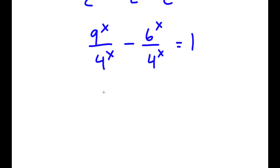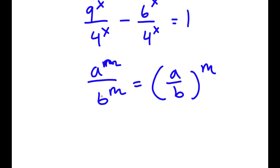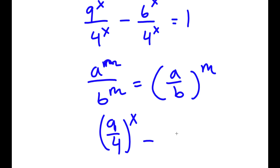Now, if I have something in the form a to the power of m over b to the power of m, this is equal to a over b to the power of m. So 9 to the power of x over 4 to the power of x equals 9 over 4 to the power of x, and 6 to the power of x over 4 to the power of x equals 6 over 4 to the power of x.